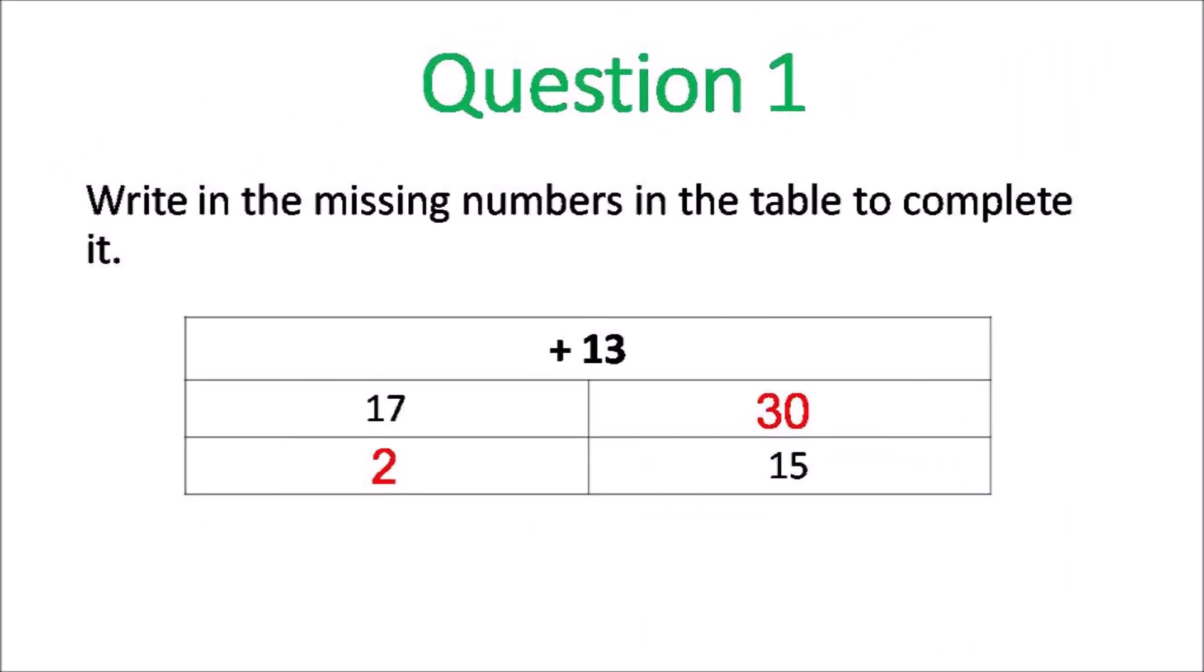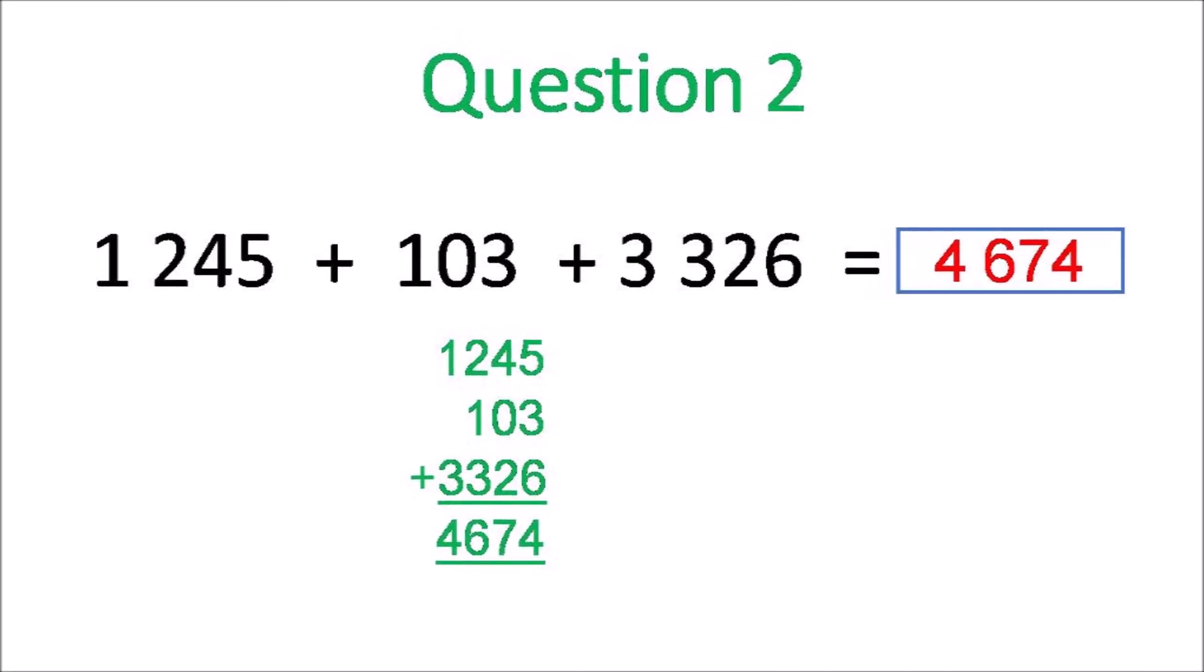Question 1. You're adding 13. 17 plus 13 is 30. And if you add a number 13, you get 15. It must be 2. Question 2. You line them up and add. You get 4,674.